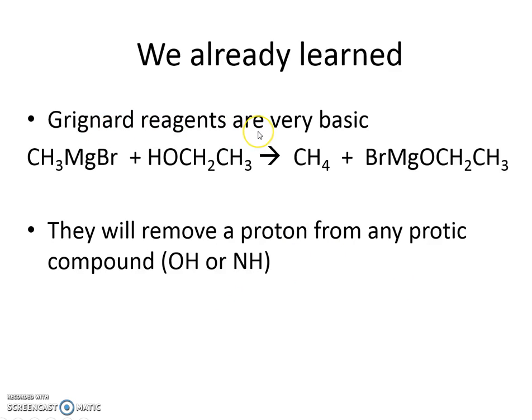We've already learned that Grignard reagents are very basic. Remember, we formed Grignard reagents by taking the alkyl halide and treating it with magnesium in ether. If you have anything protic around, immediately the Grignard reagent is going to react with that protic compound and do an acid-base reaction. This very basic methyl anion is going to grab this proton and make methane, which would be gaseous. This occurs anytime you have anything protic in combination with a Grignard reagent. So alcohols, acids, amines, even thiols will react with Grignard reagents and be deprotonated.